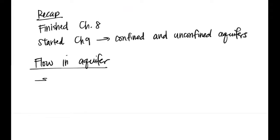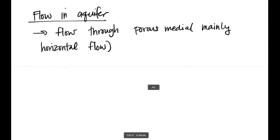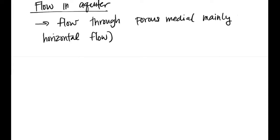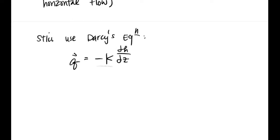When we're talking about flow through an aquifer, we're talking about flow through porous media. This flow is mainly horizontal flow. When you're talking about chapter seven infiltration, that's when it's talking about vertical flow, but this is just going to be mostly horizontal flow. We're still going to use the Darcy equation, which tells us that Q is negative K dH/dz, where previously K used to be a function of soil moisture content.